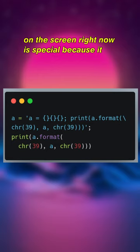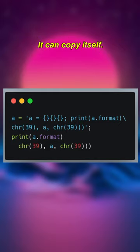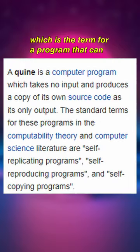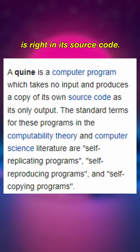This weird piece of Python code that you see on the screen right now is special because it can do something no other piece of code can do. It can copy itself. It's called a quine, which is the term for a program that can replicate itself with no external input.